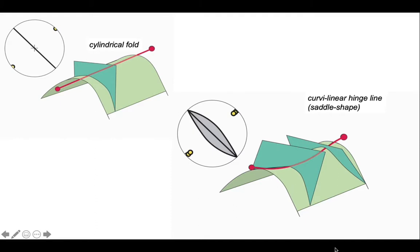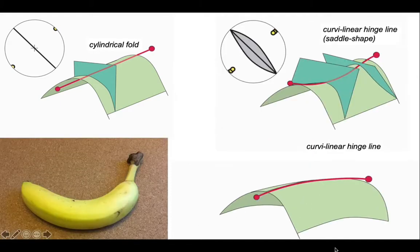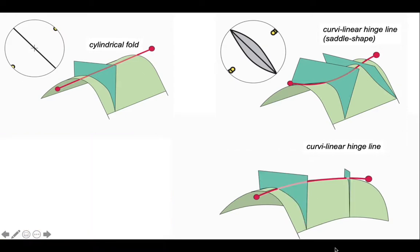It's not the only way fold hinges can be curvilinear. They can be curvilinear like this, so this time looking down on our fold, the hinge line is changing trend, and in this simple example we're assuming that the plunge remains constant. Let's pop on our profile planes for this structure. If the hinge line keeps a zero plunge amount but changes trend, the profile planes will remain vertical but will change their strike, creating a fan of orientations as you can see on the stereo plot.